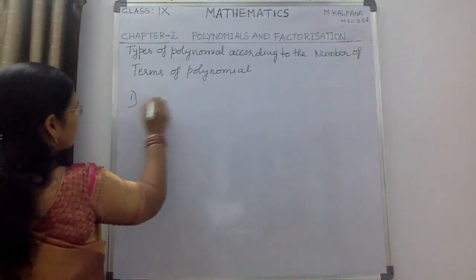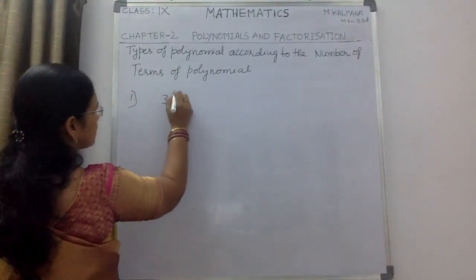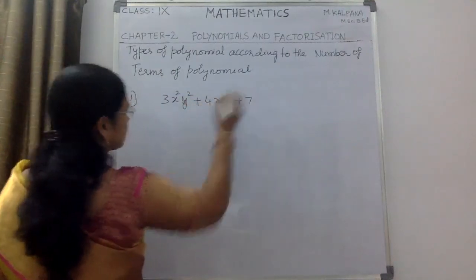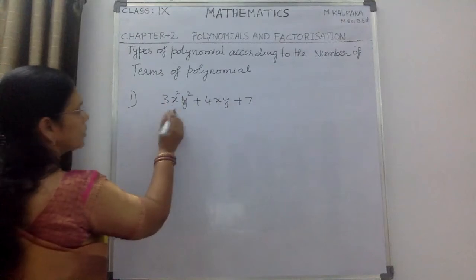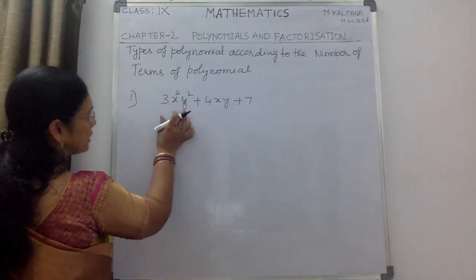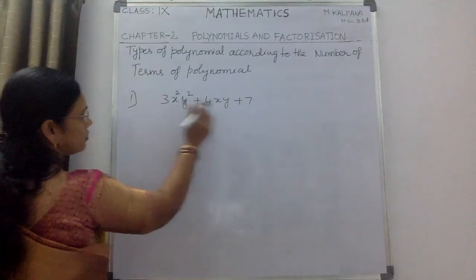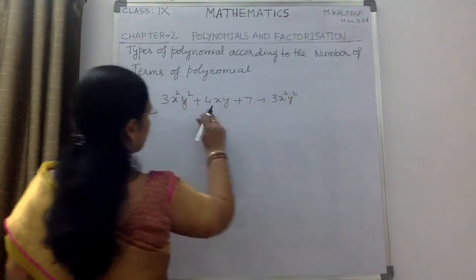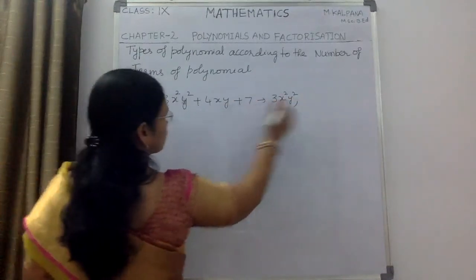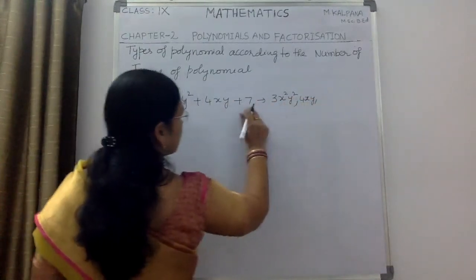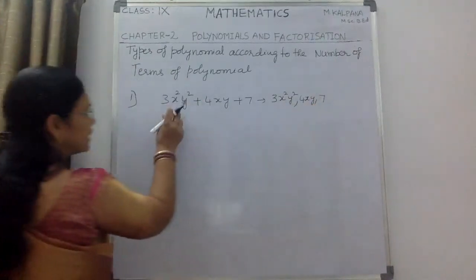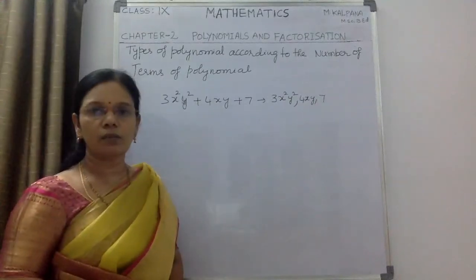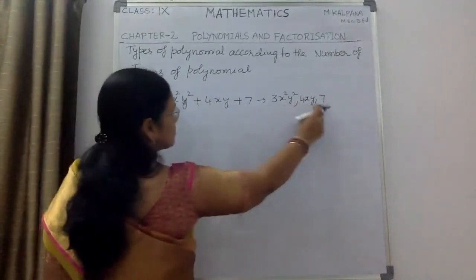The first polynomial is 3x²y² + 4xy + 7. How many terms are there, children? We know the terms are all these individual expressions. The terms in this expression are 3x²y², 4xy, and 7 is also a term. All the individual expressions which are separated by plus or minus symbol are known as the terms of the polynomial. Here, these 3 are the terms of this polynomial.